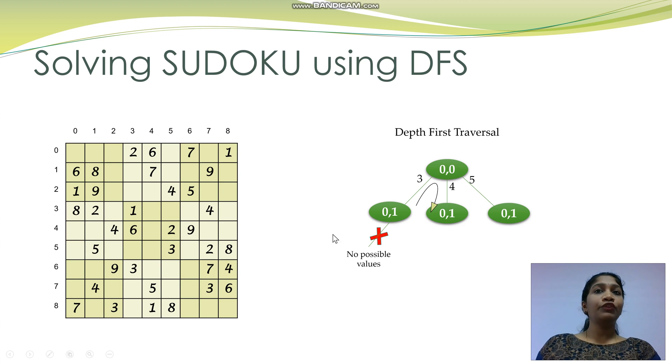So I will have to backtrack, remove the value 3 and choose the next branch which is 4. So I fill the value 4. Now, when I try to find value for 0,1, there is a unique value 3. So I fill the value 3 and move to the next empty cell which is 0,2.